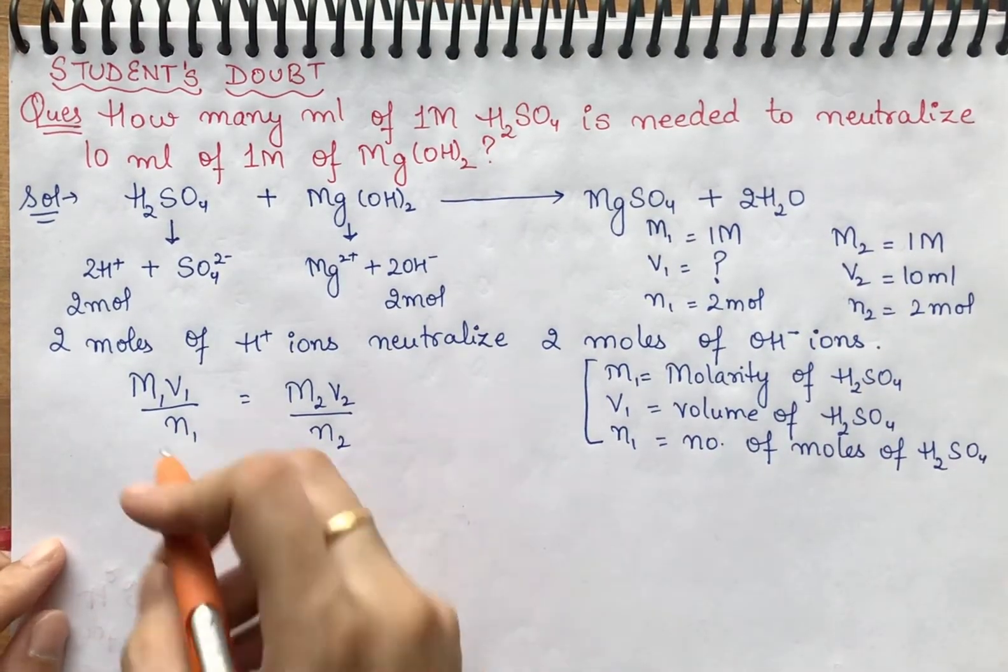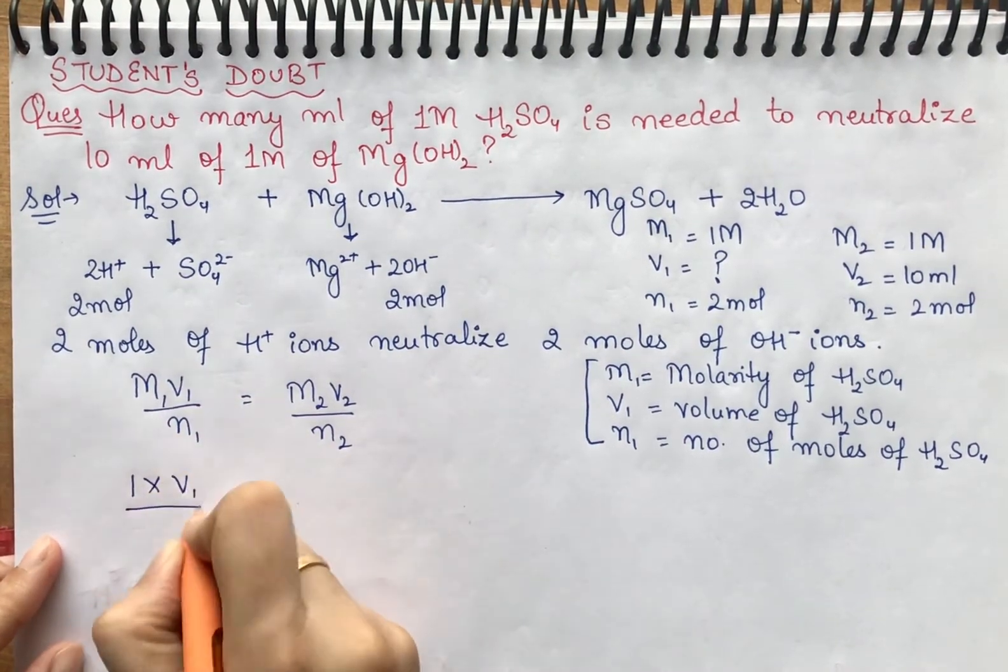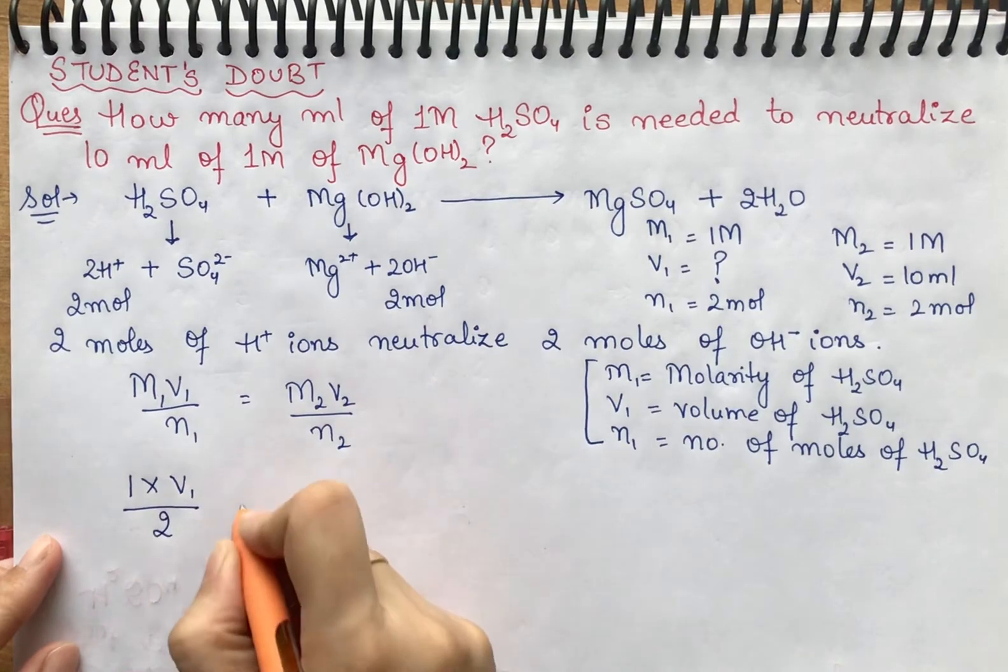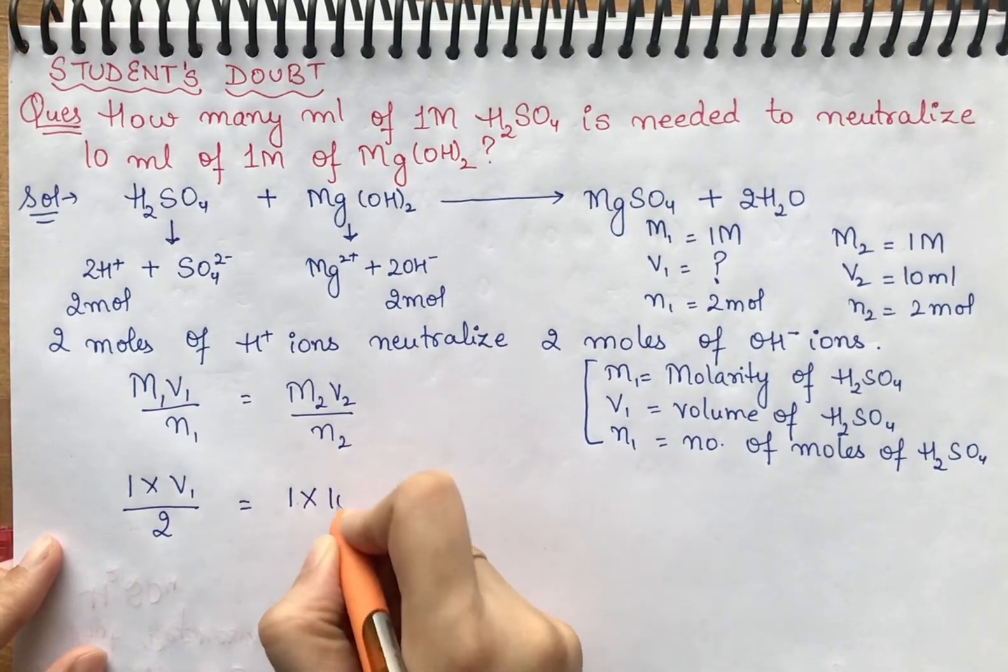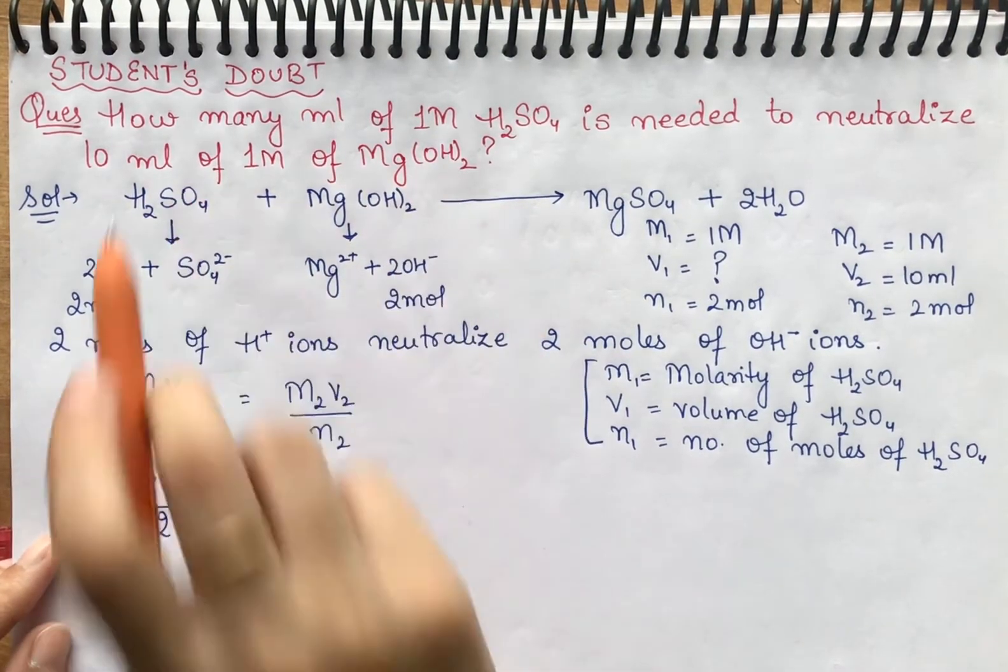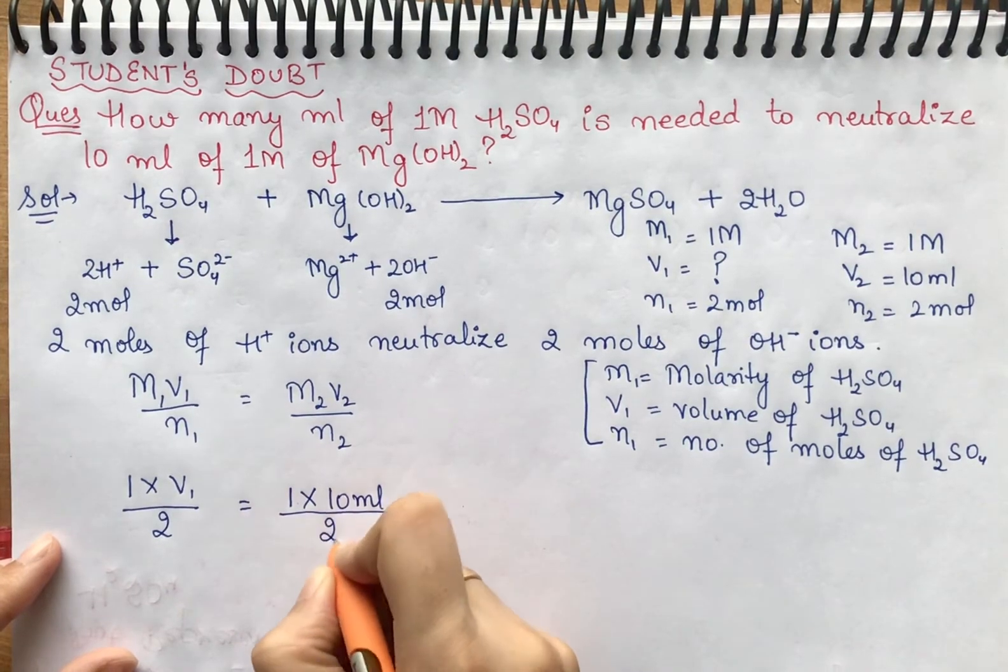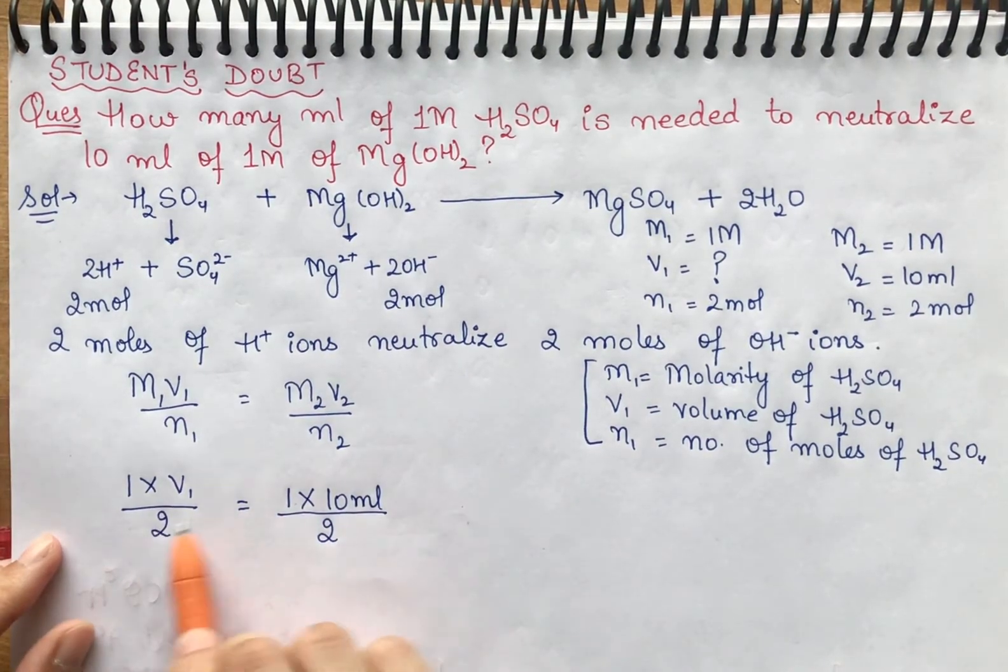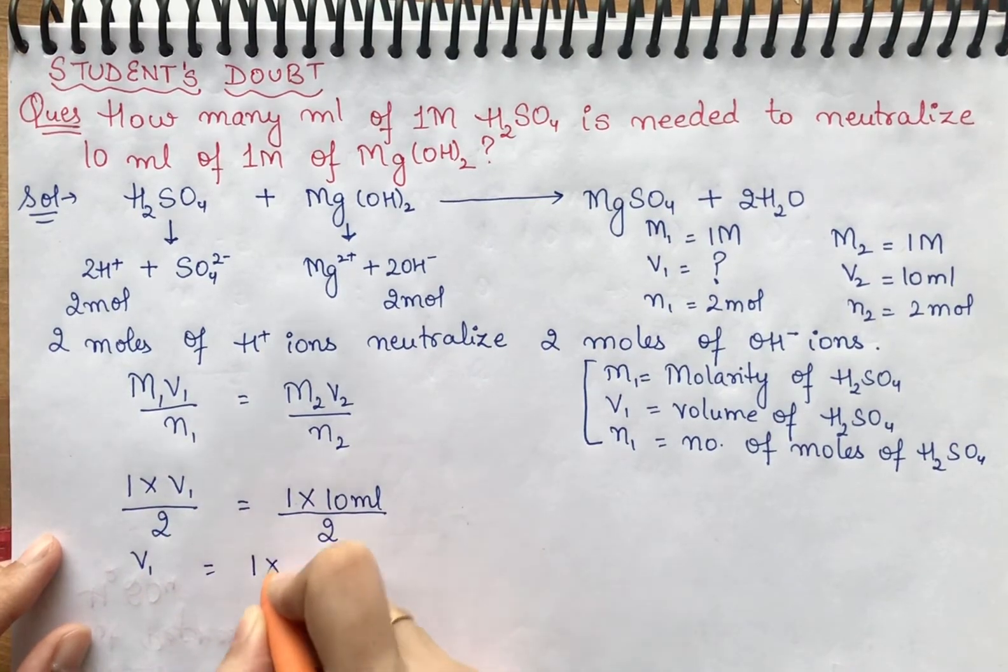Put the values: M1 value 1 times V1 over N1 value 2 equals M2 which is 1 times 10 ml over N2 which is 2. Now we will cross multiply. V1 equals 1 times 10 ml